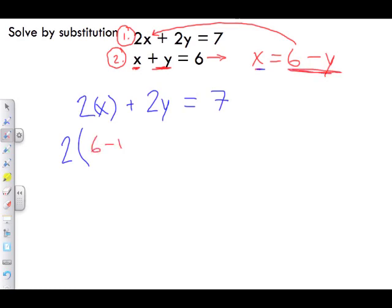Now, distributive law: this 2 multiplies in with the 6, and 2 multiplies in with the negative y. We get 12, and 2 times negative y gives us -2y, plus 2y equals 7.